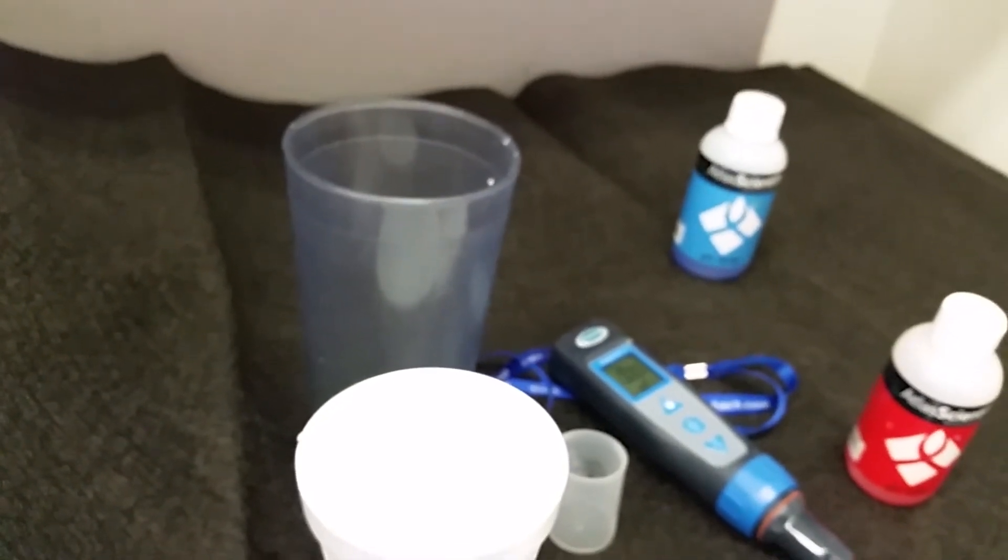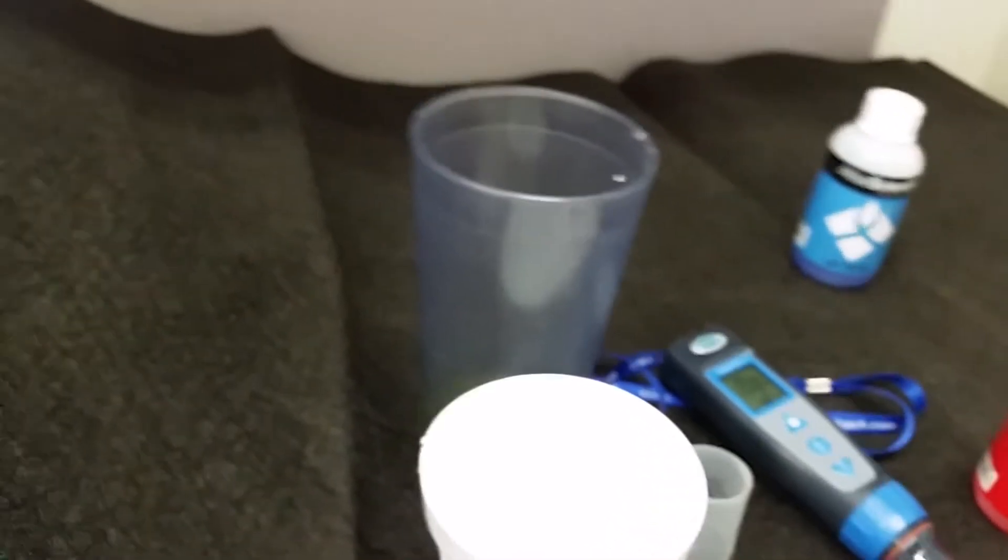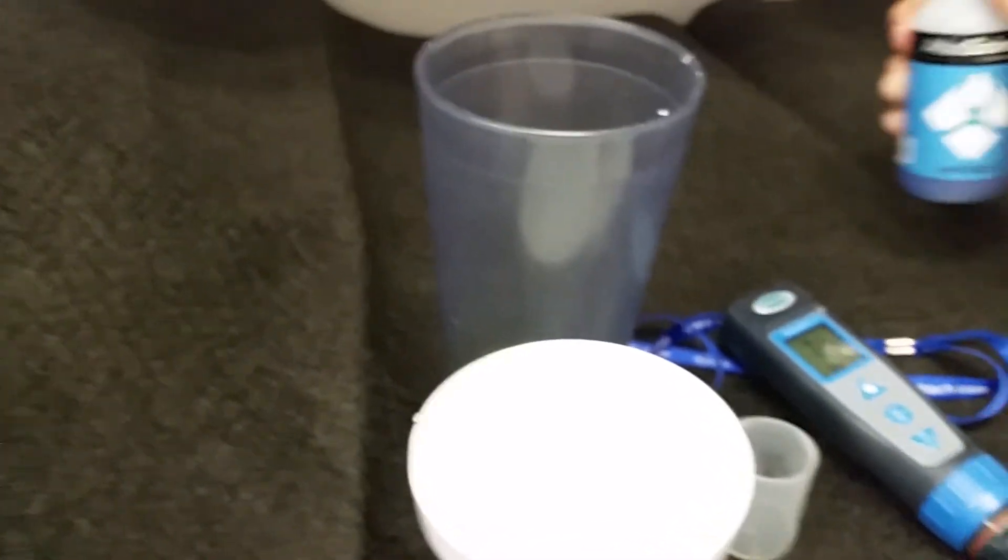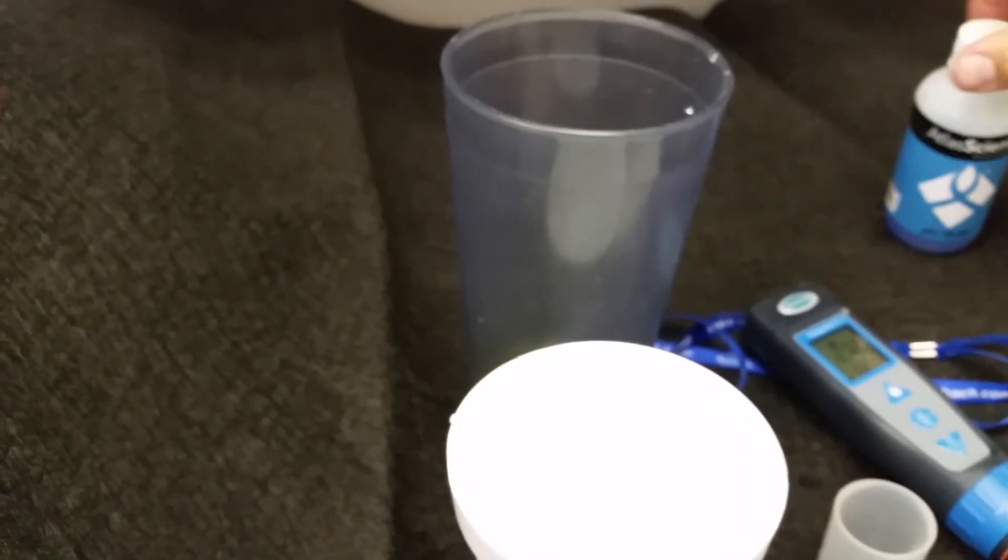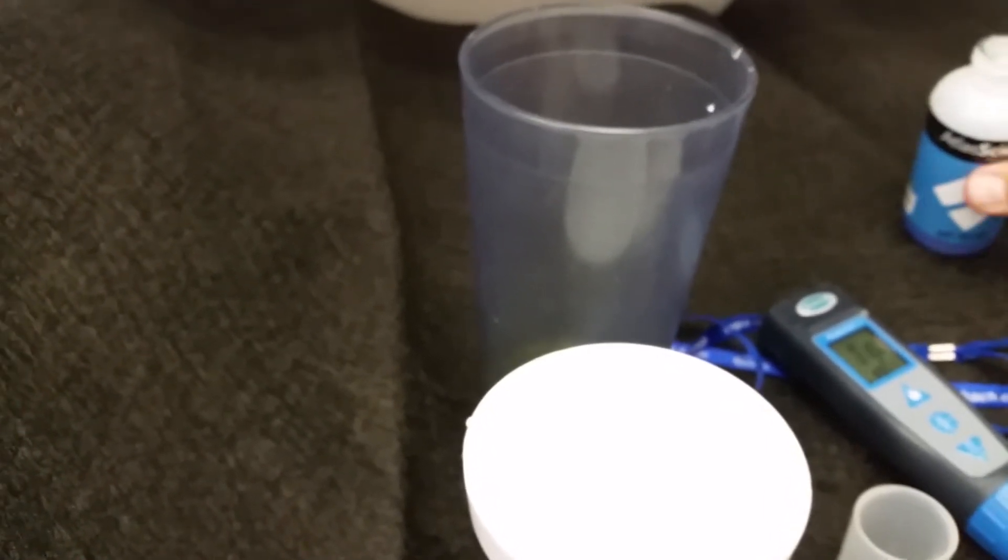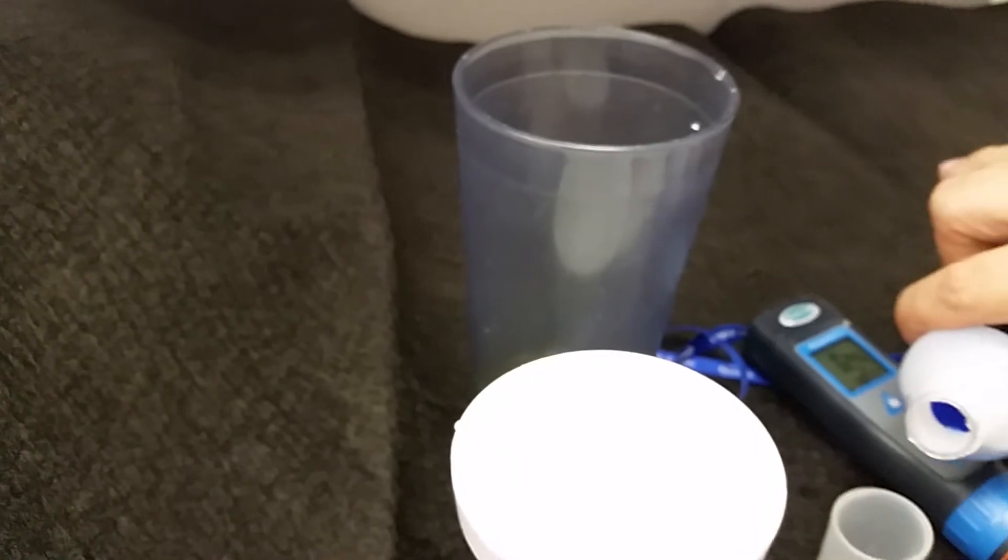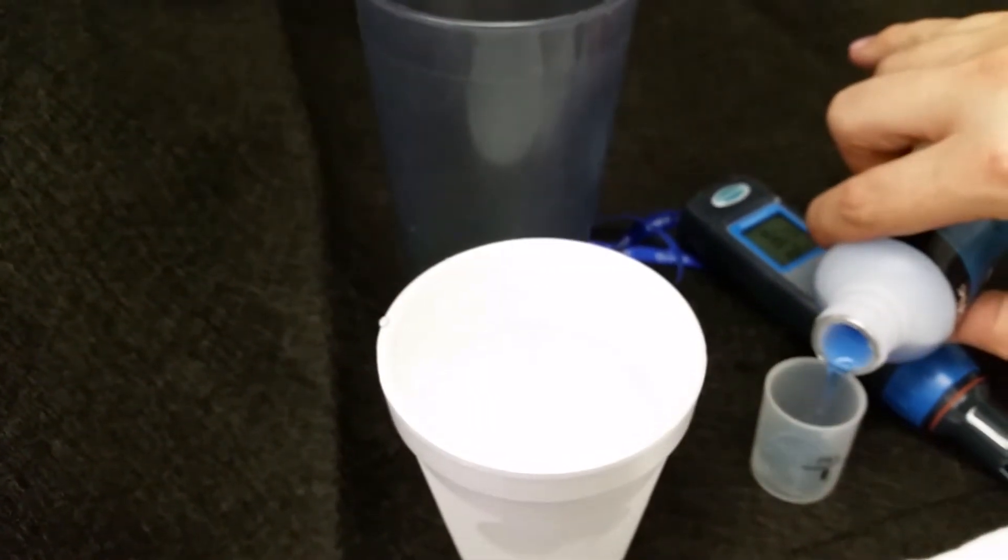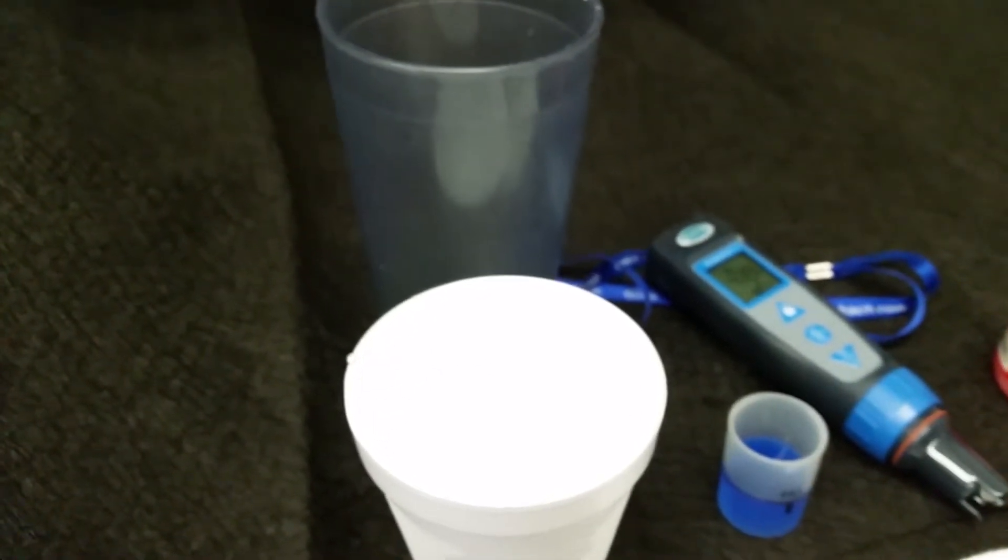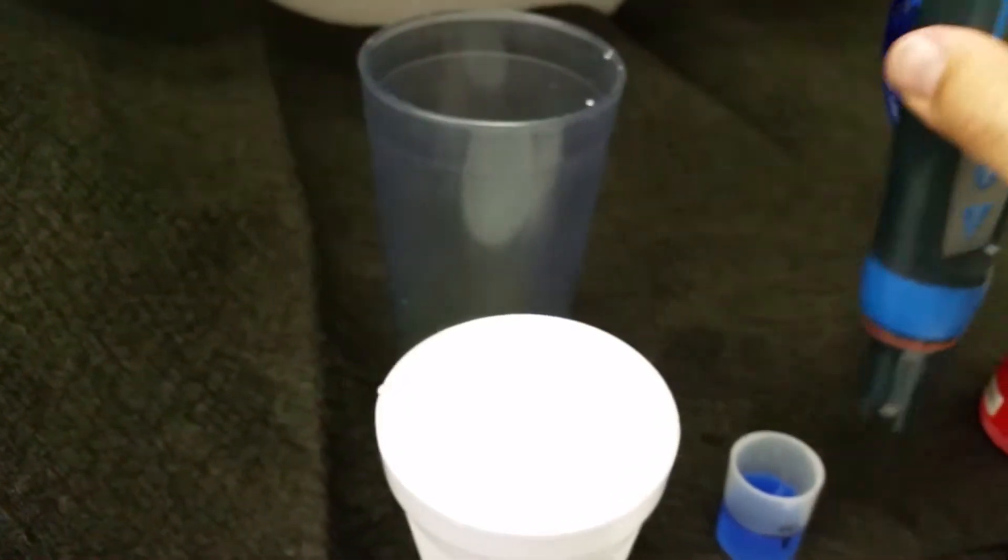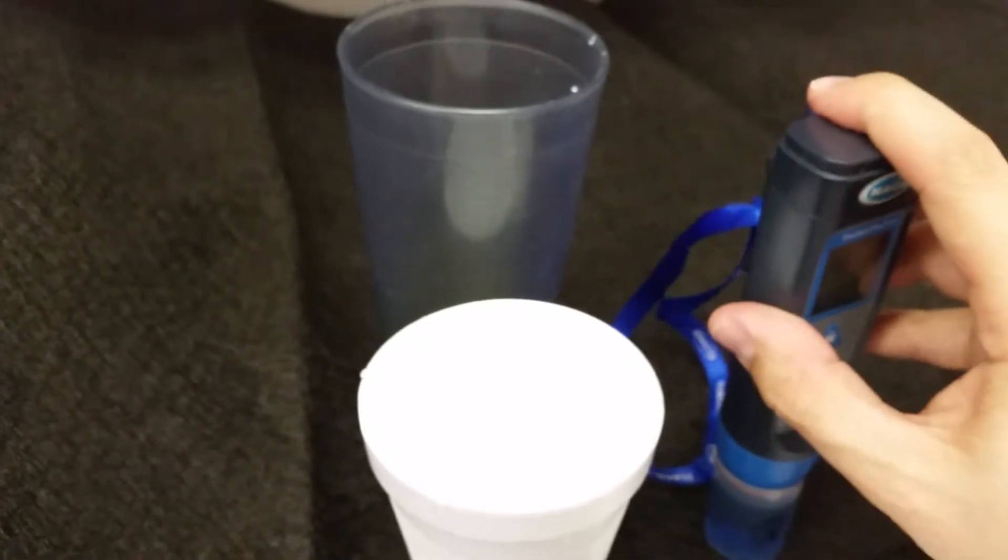Okay. Now we pour the next one in there, which is pH 10. Again, just to the fill line. We don't want to get overflowing. Okay, boom.